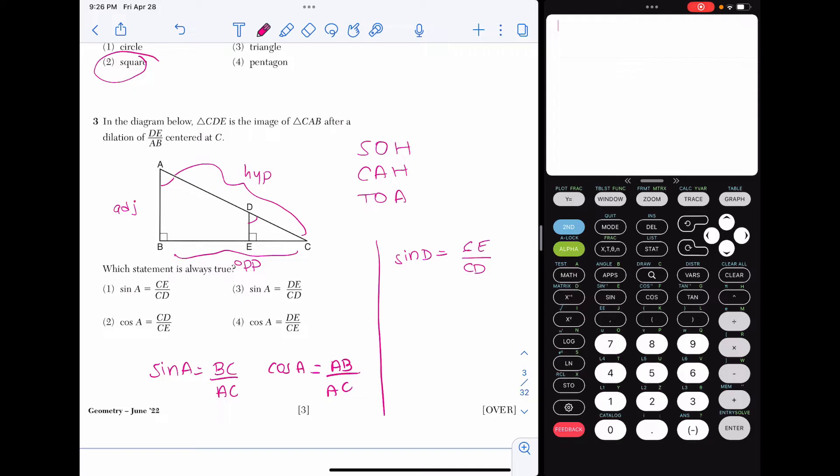And I can see that that matches choice one, CE over CD. If I were to do cosine of D, the adjacent would be side DE over the hypotenuse CD. That does not match either of our answer choices that deal with cosine. So we have choice one. So again, to do a problem like this, if you can't find the answer with sine of A, none of the answer choices work. Do the same pattern with SOHCAHTOA, but using the congruent angle, in this case, at D.